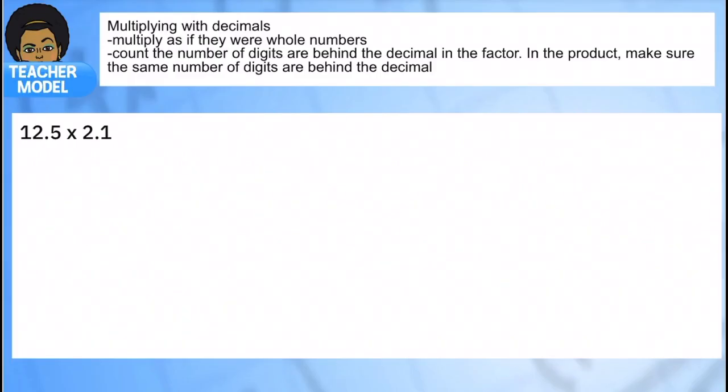Before we jump into this model for today's lesson, I just want to very quickly review what you probably already know from elementary school: multiplying with decimals. As you're multiplying, make sure that you are, at first, just multiplying them as if they're whole numbers. Just think of them, what if that decimal didn't exist? So for example, this one, what if I just had 125 times 21? And I'm just going to multiply it as if that was what I had.